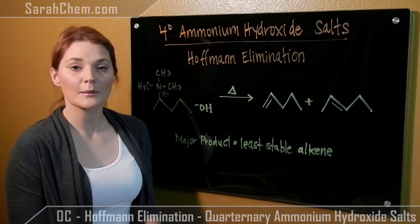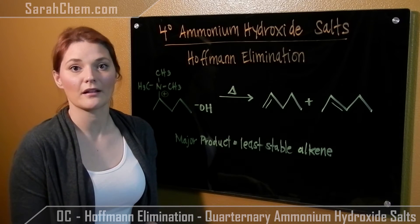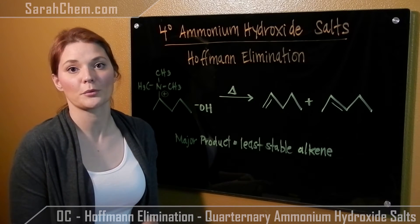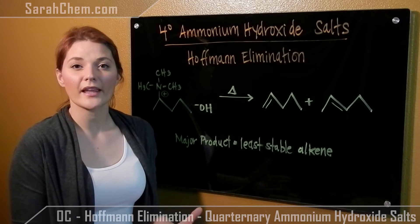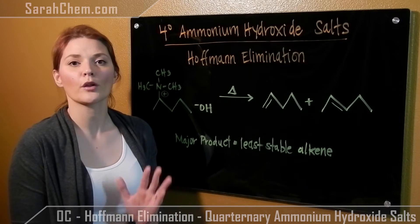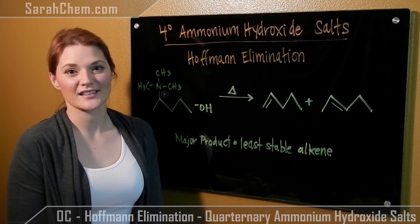In the Hofmann elimination, however, it's the least stable alkene that is your major product. To understand why that is, we'll have to take a look at the mechanism and the transition states.